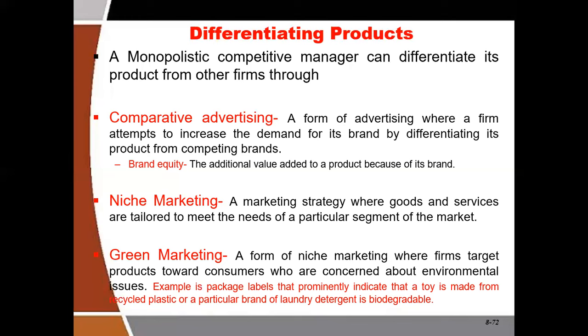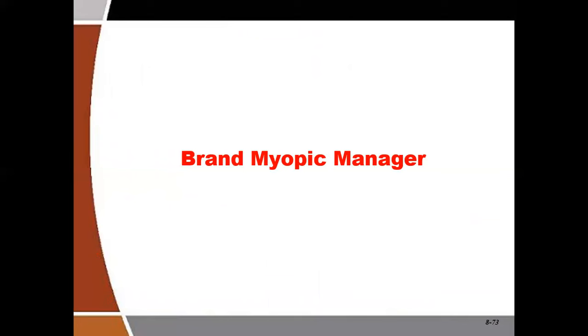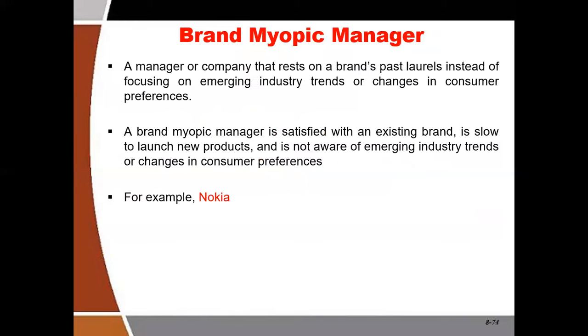Since the monopolistic competitor's strength is differentiating its product from others, a firm may become so attached to its brand that it never wants to change — because the brand is what gives it power. However, this can lead to brand myopia, making the manager brand myopic — resting on the brand's past laurels instead of focusing on emerging industry trends.